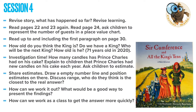Session four. Revise the story and the learning over the last couple of sessions, then read pages 22 and 23 again. Go to page 24 and ask children to represent the number of guests in a place value chart with digits, write it in words, and represent it with base 10. Read up to and including the first paragraph on page 30, then stop and have conversations about the king: how old do they think he is, how many candles will he have on his cake? Depending on which country you're in, talk about whether you have a king. For this example, using Prince Charles — who was 71 years old in 2020 — explain that he has had new candles on his cake each year and ask children to estimate how many candles will have been used altogether by his 71st birthday.